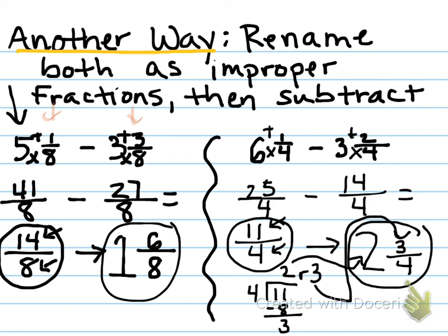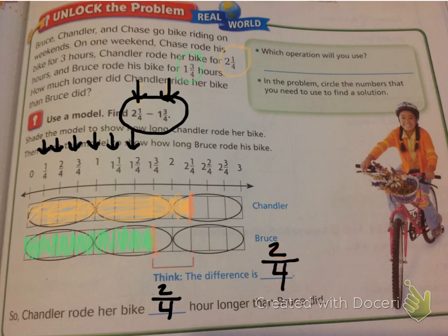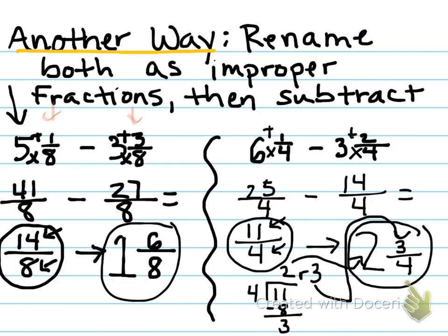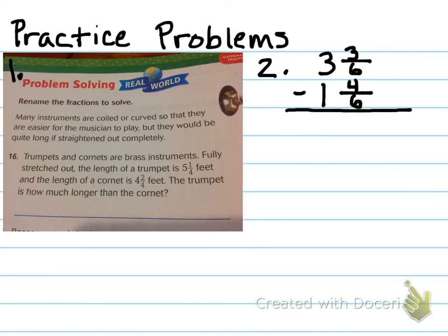So whichever strategy you'd like to use for the practice problems is up to you. You could use a number line like we did first depending on the denominator, or you can rename both fractions as improper, follow the operation subtracting and then turn it back into a mixed number as your final difference. Either one. You can re-watch the video to review either strategy. Here are your two practice problems. You have two tonight. Your first one is a word problem about trumpets and cornets. Cornets are brass instruments. That's a new instrument to me. And then number two is just the mixed number problem. So one word problem, one straightforward problem. All right, have a good night.